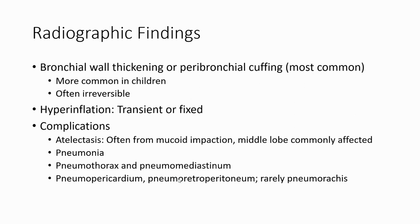On radiograph, we will find bronchial wall thickening or peribronchial cuffing, which is more common in children and is often irreversible. We will also find hyperinflation, which can be transient.